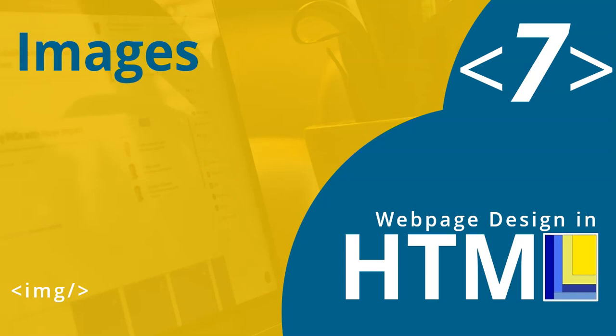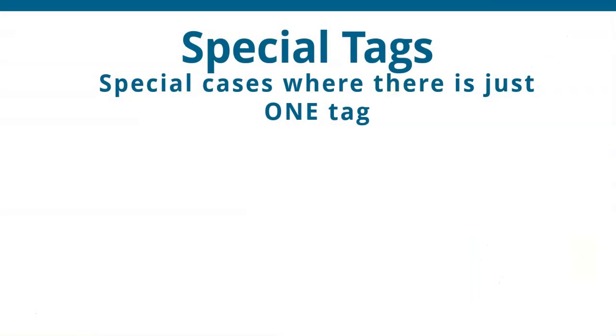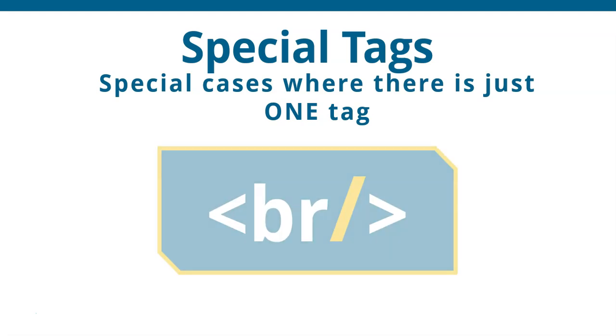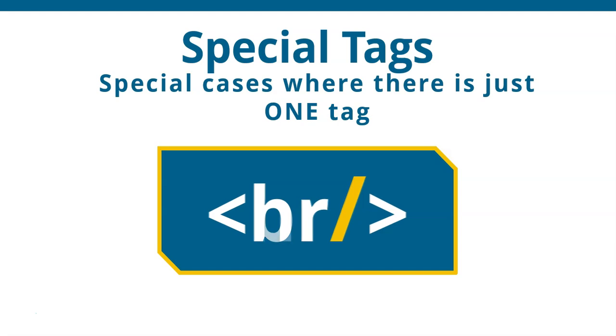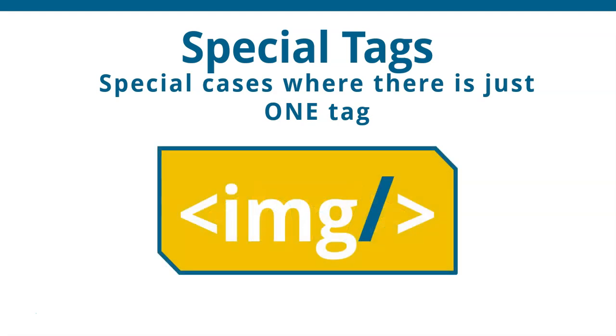This is part 7 of our web design series in HTML, and in today's lesson we're going to be looking at how we can add images to our website. In our previous video you learned about special tags — the ones where there's no open and close, just one tag that closes straight away. That was the BR or break tag and the horizontal rule tag. The IMG tag is one of those as well; it's a special tag which closes immediately.